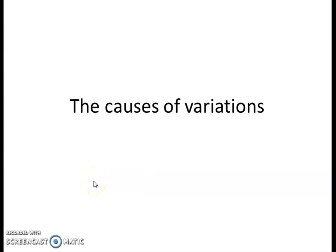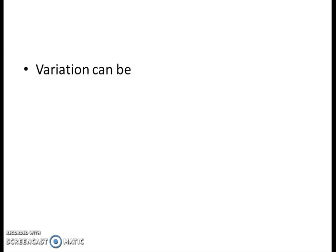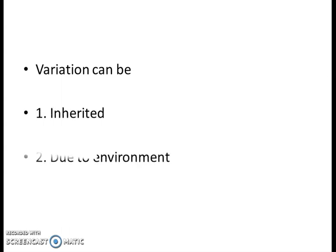Welcome to this video tutorial. In this video we are going to learn the causes of variation. Previously we learned about the different types of variation. Keeping in mind the previous videos, we can say that variation can be inherited or it can be due to the environment — environmental variation or inherited variation. In this video we are going to talk about environmental variation and how the environment can affect variation.